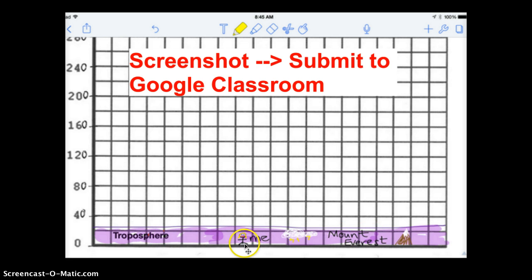And then I wanted to represent three things. That this is the layer I live in. This is the layer that has weather and clouds. And this is the layer where Mount Everest is.